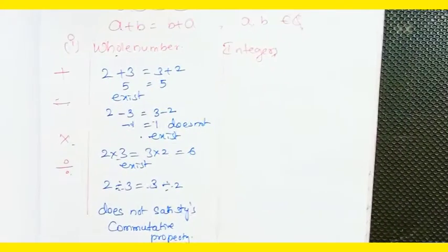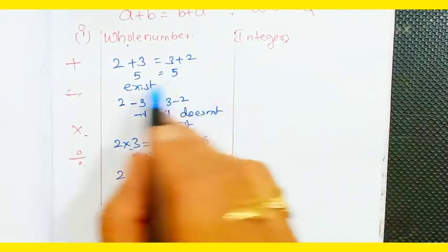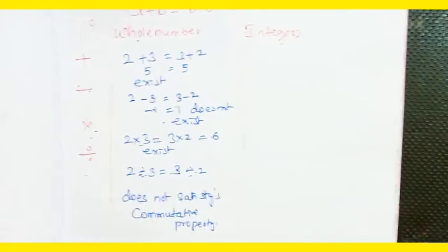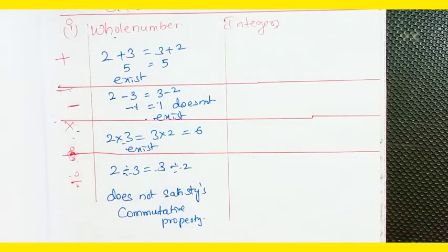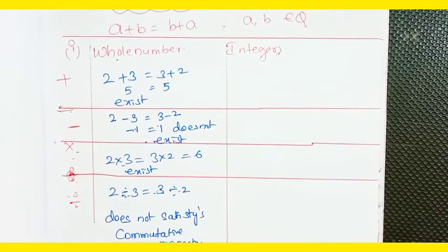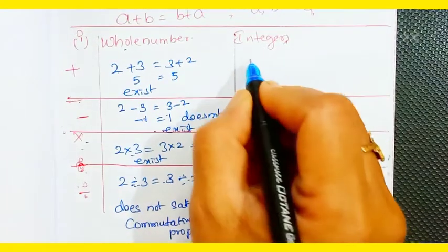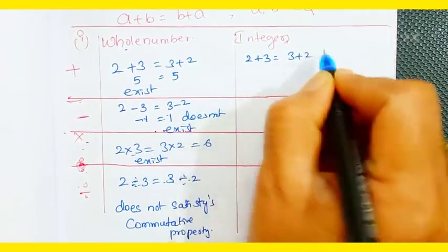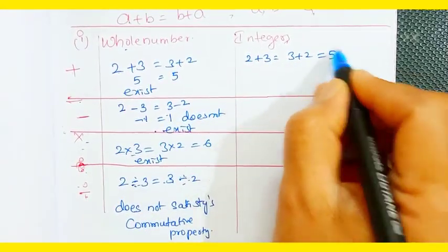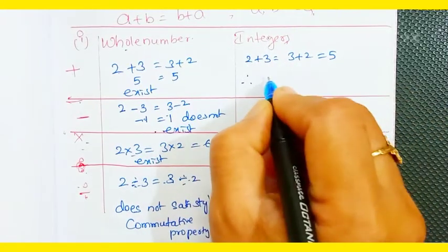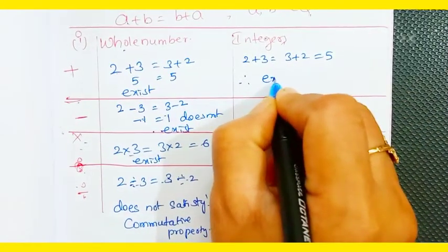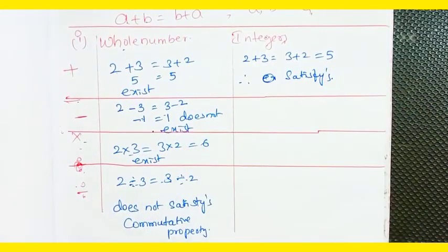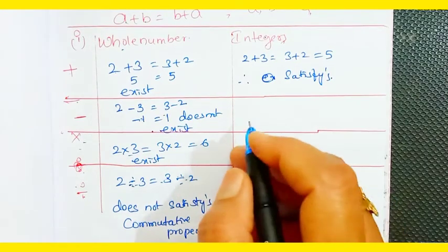Now we check commutative property for integers. Under addition: 2 + 3 = 3 + 2, which gives 5. Since 5 belongs to integers, the commutative property satisfies for integers under addition.